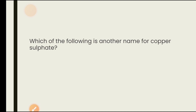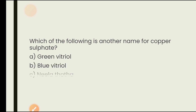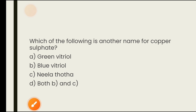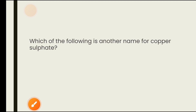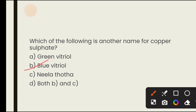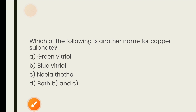Which of the following is another name for copper sulphate? Options are green vitriol, blue vitriol, neela thotha, both B and C. Copper sulphate is also known as blue vitriol and neela thotha. The answer is D — both B and C.